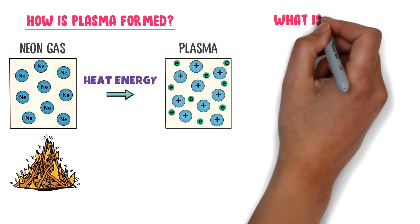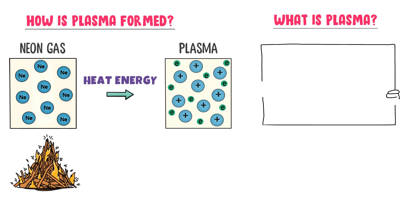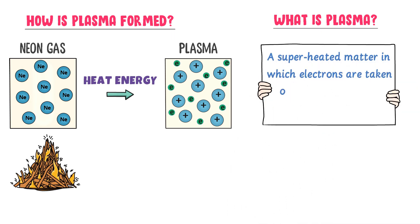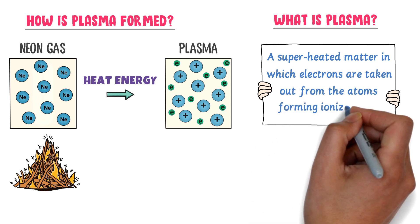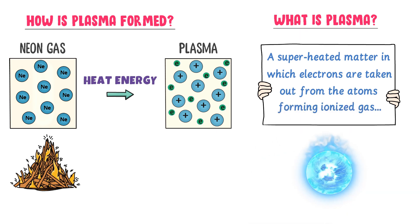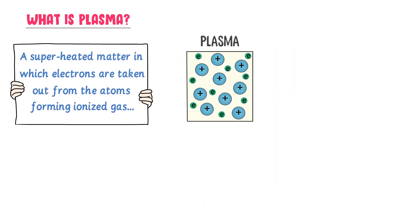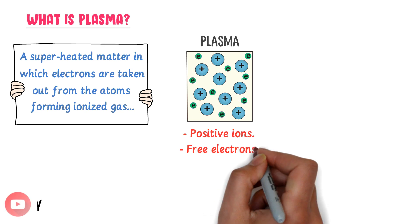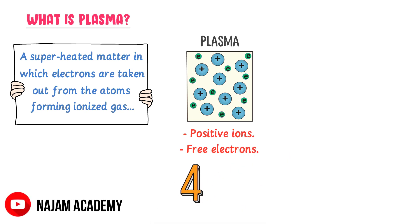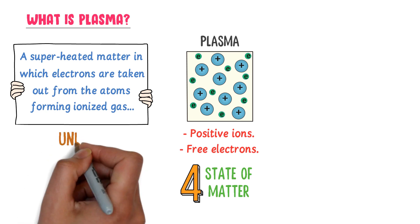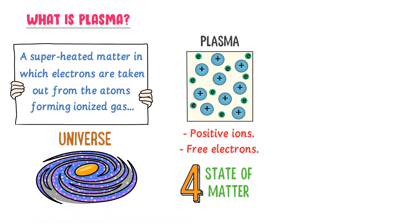Now what is plasma? We define plasma as a superheated matter in which electrons are taken out from the atoms, forming an ionized gas. Remember that plasma is made up of positively charged ions and free electrons. It is also called the fourth state of matter, because so much of the universe is made up of plasma.